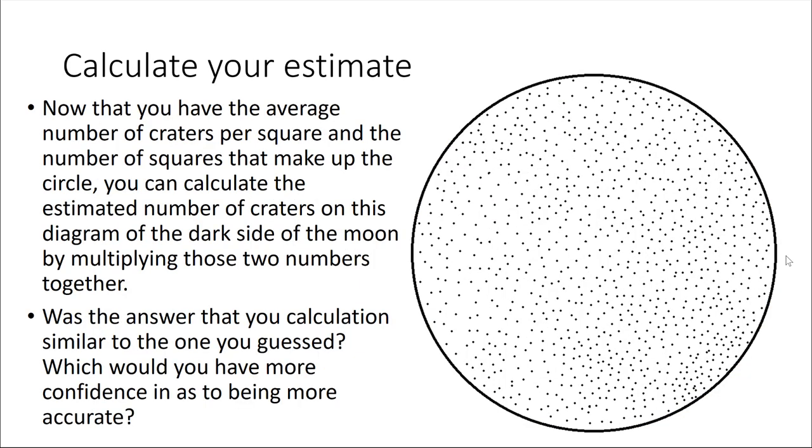Now that you have the average number of craters per square, and the total number of squares that make up this diagram of the moon, you can calculate the estimated number of craters on the dark side of the moon by multiplying those two numbers together.